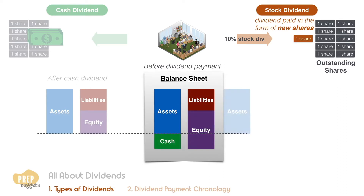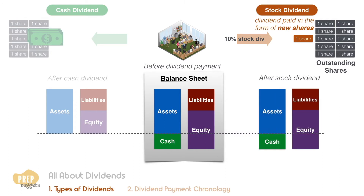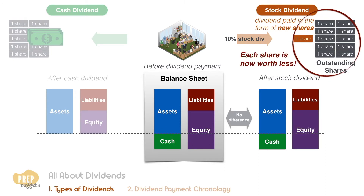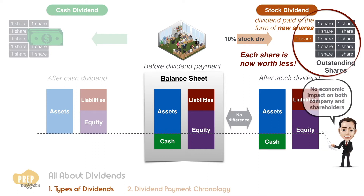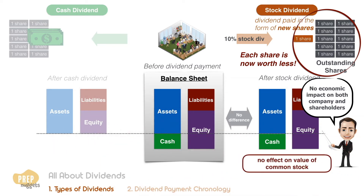In the case of a stock dividend, the cash is conserved in the firm's balance sheet and the shareholders' equity remains the same. The main difference is that there are now more shares outstanding, but total equity remains the same. Each share is now worth less. So as you can see, nothing much has changed — there is no economic impact on both the company and shareholders.